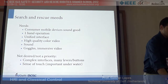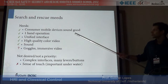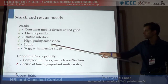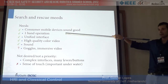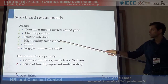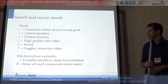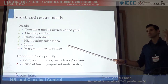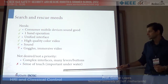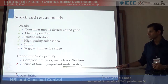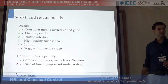Yesterday I asked the question: what are the needs for interfaces for search and rescue? The things that came out were: consumer mobile sounds good, one-hand operation, unified interface, high-quality color video, sound, goggles, immersive video. I think all these things can already be delivered using these kinds of GUIs. High-quality video right now probably still requires plugins, but they're working on a protocol that will eliminate that need. Goggles will eventually be powered by a browser too. Things that are not a priority: complex interfaces, and there's no real need right now for sense of touch — which you cannot provide with these interfaces, of course. But in general, things are more or less covered, so that's a good sign.